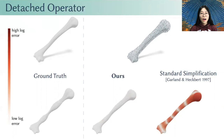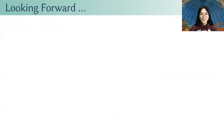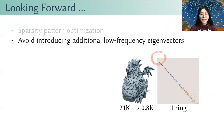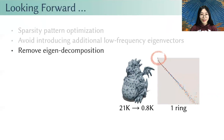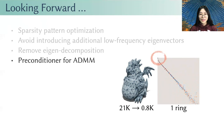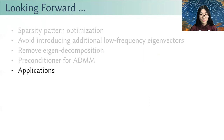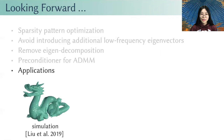Looking forward, there are many interesting directions for future work. First, jointly optimizing the sparsity pattern and the operator entries may lead to even better solutions. It will also be interesting to explore different regularizers and energy formulations to avoid introducing additional low-frequency eigenvectors. Incorporating fast eigenvector approximation or removing the need for eigen-decomposition will further accelerate spectral coarsening. Adding a preconditioner could make our ADMM solver more robust to scaling issues. Finally, it will be interesting to extend our method to many other applications including physics-based simulation, topology optimization, algebraic multigrid, and spectral graph reduction.